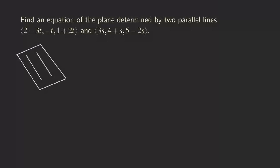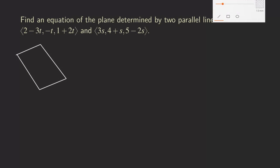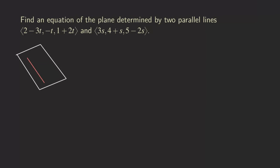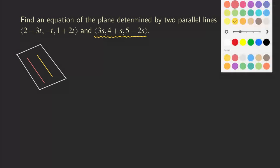We have two lines that are parallel. It would be a good idea to label them in different colors. Let's say if you have a line that's in red, and the other one in yellow. Our goal here is to find the plane that contains both lines.